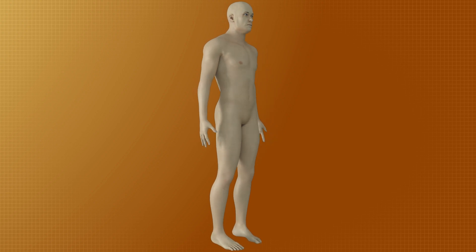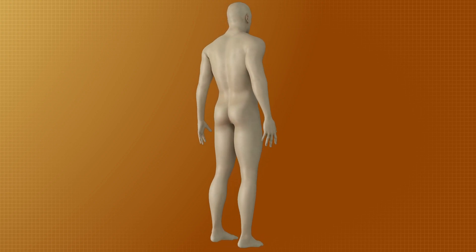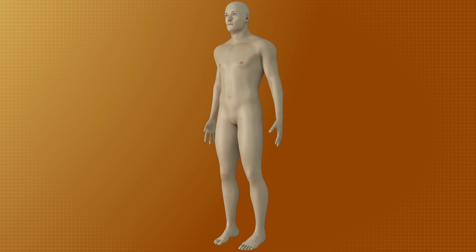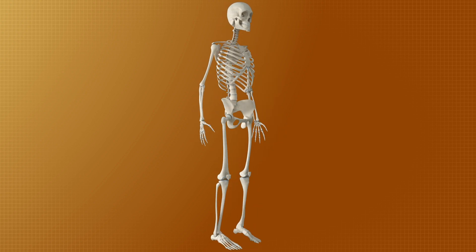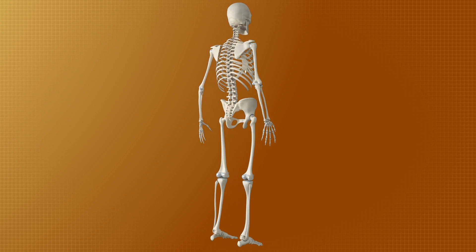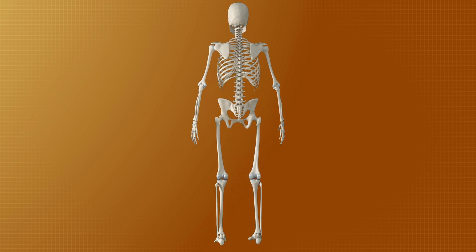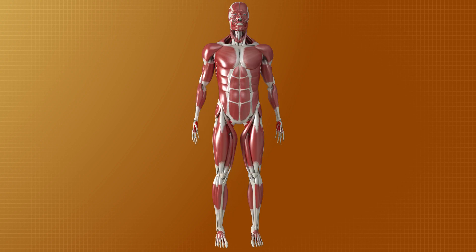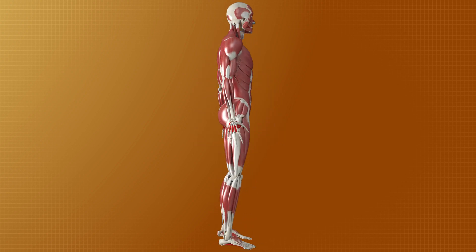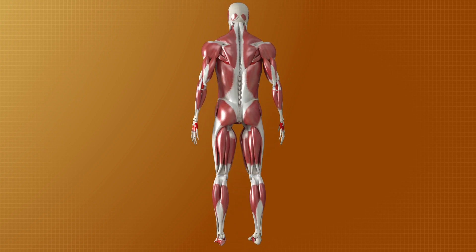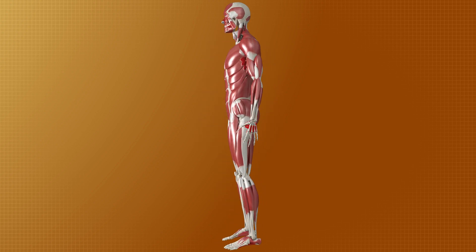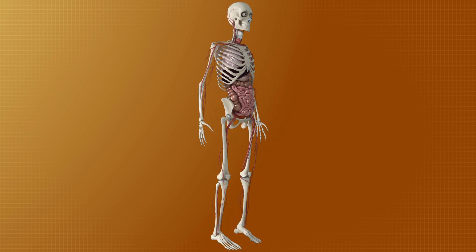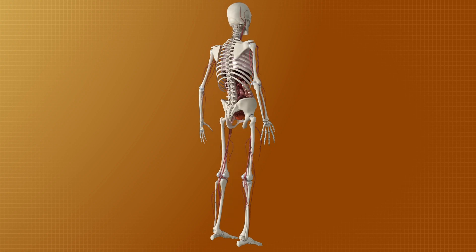The human body is a complex and highly organized structure made up of cells, tissues, and organs, each playing a vital role in maintaining the body's overall function and health. To understand how the body works, it is essential to learn about the different systems that make up this intricate organism. Each system consists of specific organs and structures that work together to perform particular tasks.